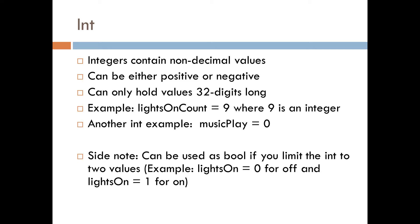Let's go to the next variable type: integers, or int as Papyrus calls it. They contain non-decimal values. Important to note: they can be positive or negative, and they can only hold values that are 32 digits long, with each number being a digit. In the example, 'lights on count' is set to 9, meaning there are nine lights on. Another example: 'music play equals zero' means no music is currently playing, or zero songs in play, depending on how you use it.